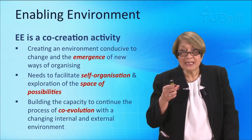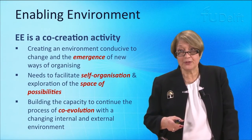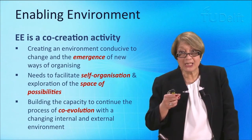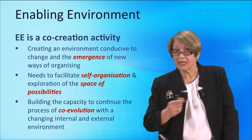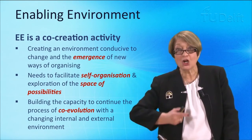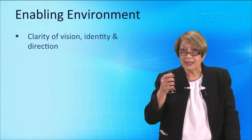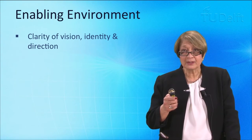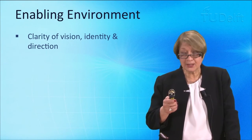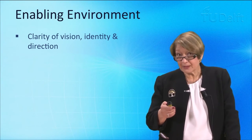We are building capacity to continue that process of co-evolution with a changing internal and external environment. This is not a one-off; this is a constant evolving, co-evolving process. So an enabling environment needs clarity of vision. It needs clarity of identity and clarity of direction, but that does not mean control.